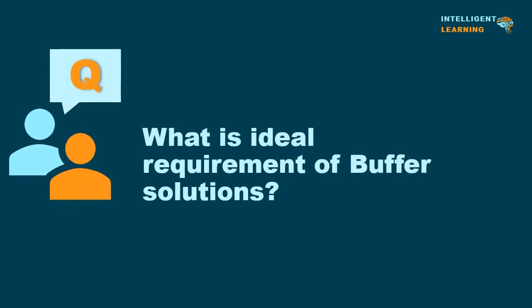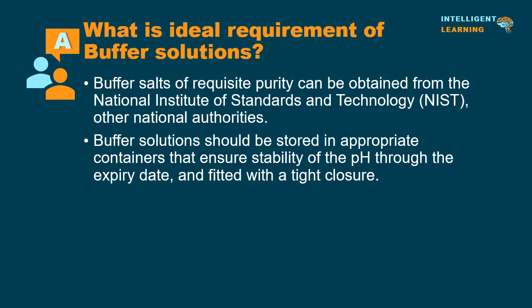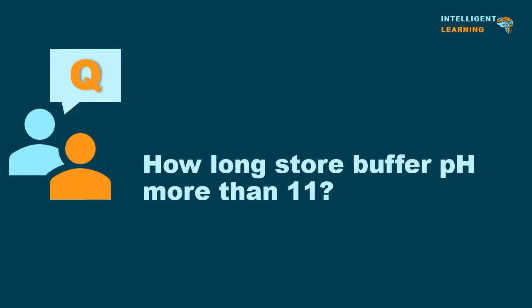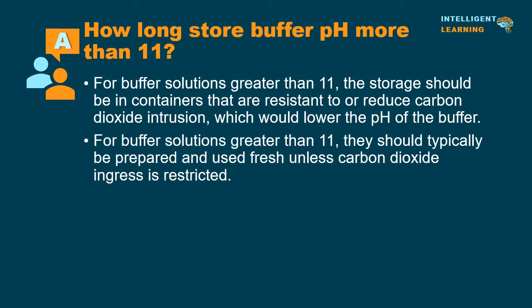What is the ideal requirement of buffer solutions? Buffer salts of requisite purity can be obtained from the National Institute of Standards and Technology or other national authorities. Buffer solutions should be stored in appropriate containers that ensure stability of the pH through the expiry date, and fitted with a tight closure. For buffer solutions greater than pH 11, storage should be in containers resistant to or reducing carbon dioxide intrusion, which would lower the pH of the buffer. They should typically be prepared and used fresh unless carbon dioxide ingress is restricted.